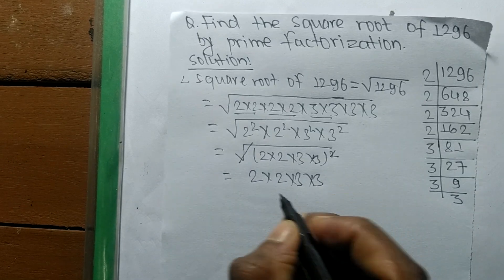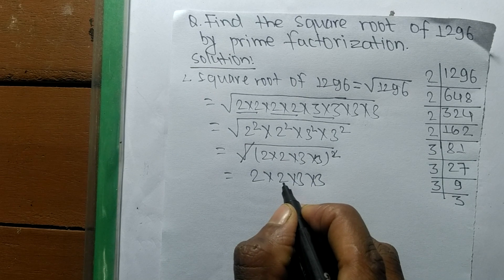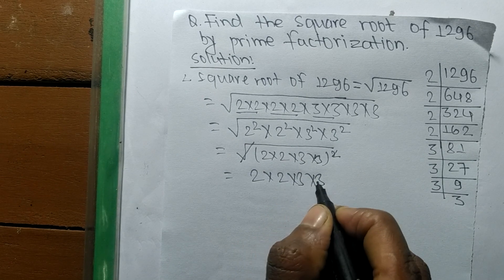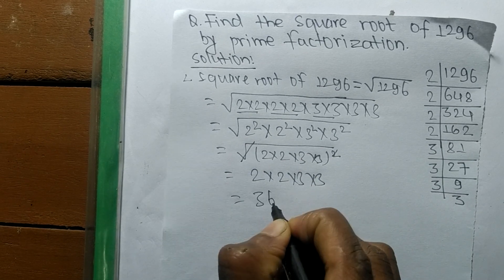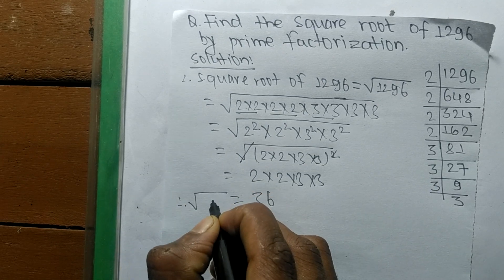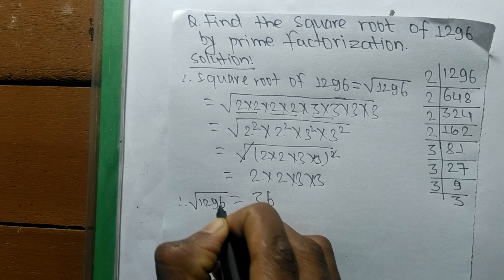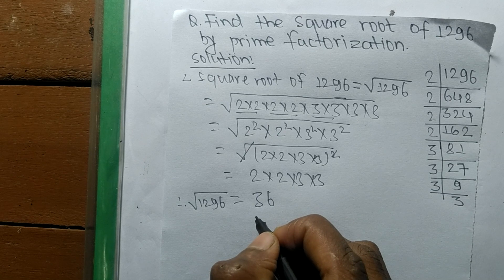So 2 times 2 means 4, 4 times 3 means 12, and 12 times 3 means it is 36. So the square root of 1296 is equal to 36.